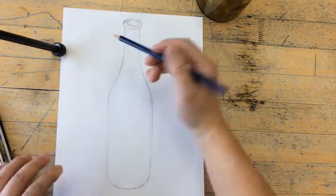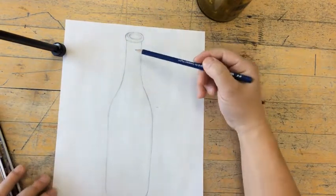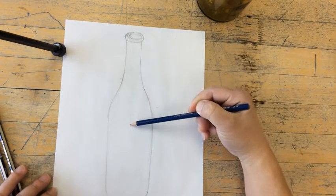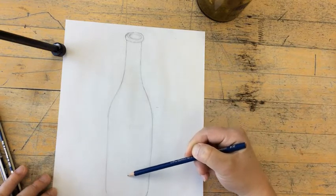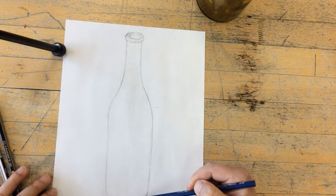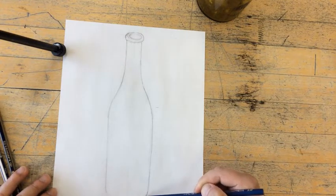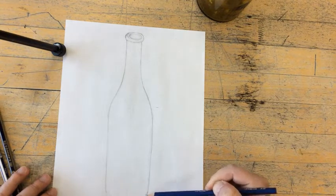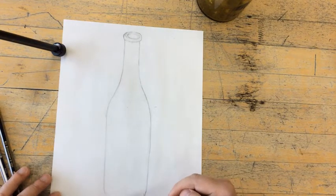So now because I know that my bottle was manufactured and it's symmetrical, I'm going to draw a line straight through the middle to begin my cross contour lines. Remember cross contour lines are these imaginary lines that wrap around a form. If you can train your eyes to see these lines it just makes it easier to shade it later on.